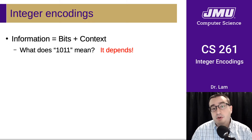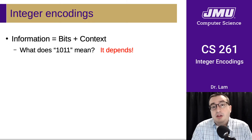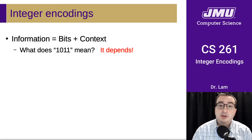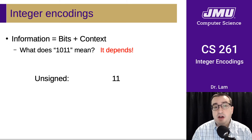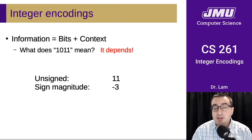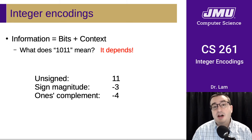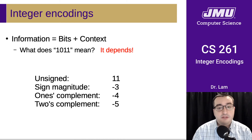If we were to think about what does 1011 mean, it depends on what kind of encoding we're using. If it's an unsigned number, then its decimal value is 11. If we're using signed magnitude, its value is negative three. If we're using one's complement, its value is negative four. And if we're using two's complement, its value is negative five.